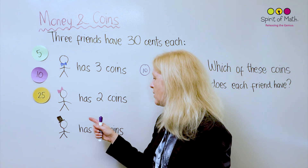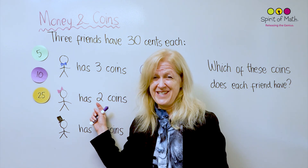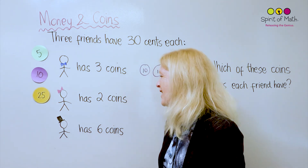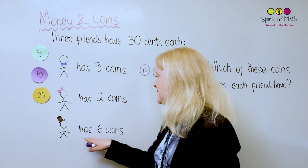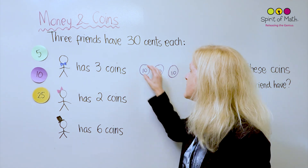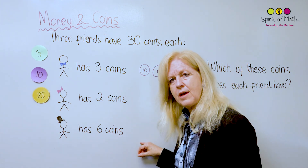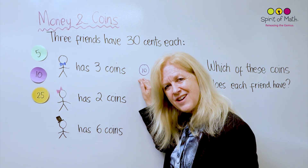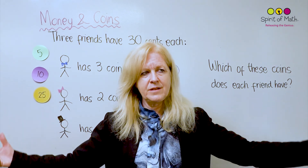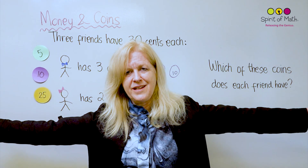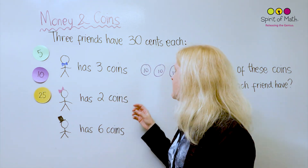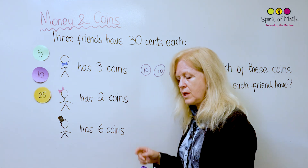Now let's look at this next one. I'm going to do this one last because the person with a bow in their hair has two coins and that's a bit tricky. Let's go to the last one first. This person with a top hat has six coins, so we know it's going to be six coins. If three 10-cent coins make 30 cents, then with six coins it will have to be smaller than 10 cents, because six bigger coins would be way too big — that would be a huge number. Six smaller coins could equal the same 30.